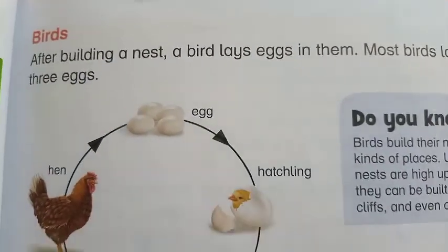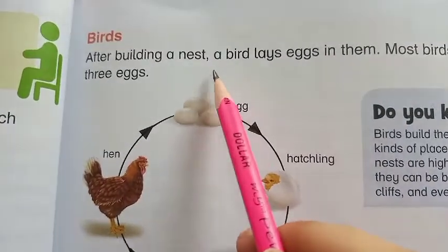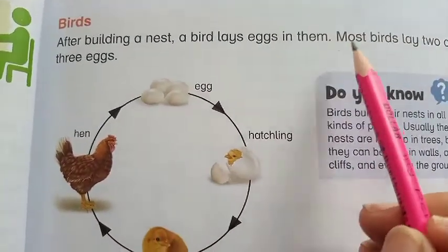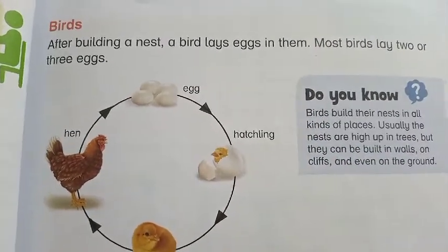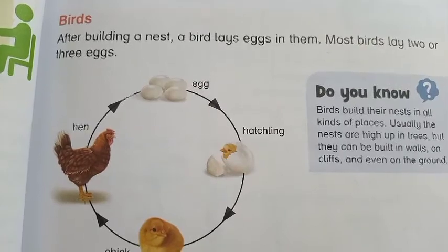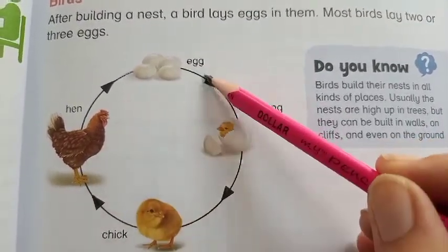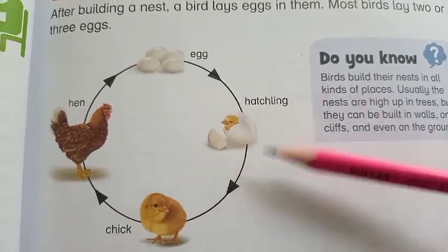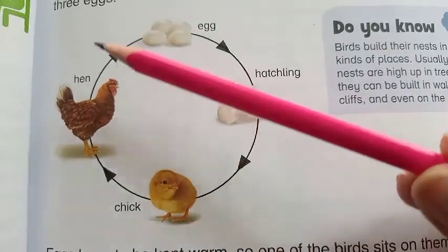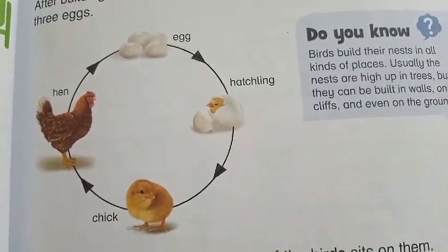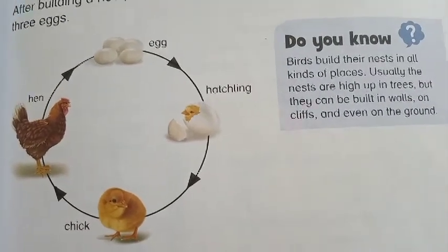What about birds? After building a nest, a bird lays eggs in it. Most birds lay 2 or 3 eggs. Then the eggs are hatched and a chick comes out. The chick is then converted into an adult bird. Do you know that birds build their nests in all kinds of places? Usually the nests are high up in trees, but they can also be built in walls, on cliffs, and even on the ground.